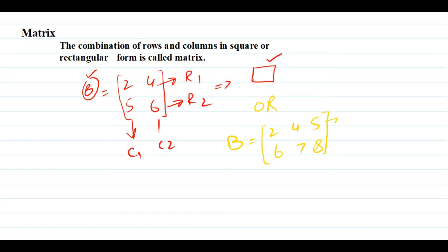It has rows R1, R2 and columns C1, C2, C3. So we can call it a matrix because it is making the shape of a rectangle.